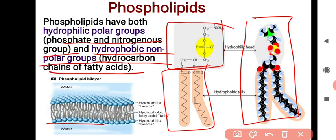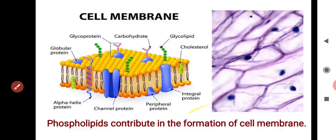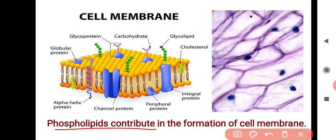In the cell membrane structure, the hydrophilic head — containing phosphate and nitrogenous groups — faces the water, while the hydrophobic fatty acid tails face away from water. Lipids are hydrophobic and do not dissolve in water. Phospholipids contribute to the formation of the cell membrane, also known as the plasma membrane.